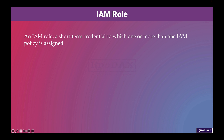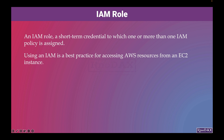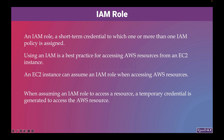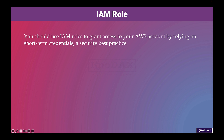An IAM role is a short-term credential to which one or more than one IAM policy is assigned. Using an IAM role is a best practice for accessing AWS resources from an EC2 instance. When assuming a role to access an AWS resource, a temporary credential is generated. You should use IAM roles to grant access to your AWS account by relying on short-term credentials, which is a security best practice.